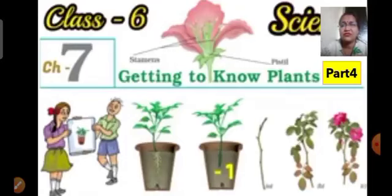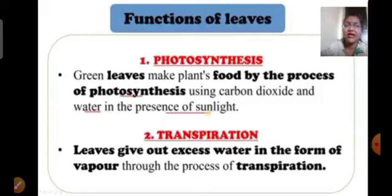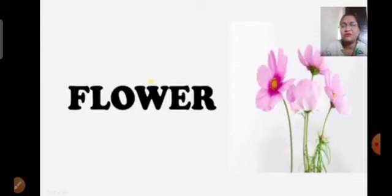In the previous session I explained two important functions of leaves: photosynthesis and transpiration. Photosynthesis is the process in which green leaves make the plant's food using carbon dioxide and water in the presence of sunlight and chlorophyll. Transpiration is the process in which leaves give out excess water in the form of water vapor.